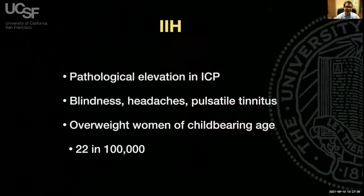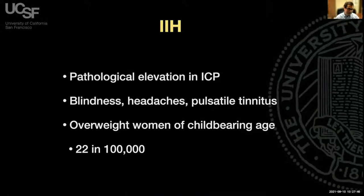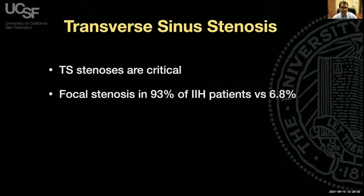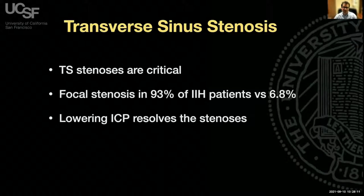Idiopathic intracranial hypertension is a pathological elevation in intracranial pressure that can cause blindness, headaches, or debilitating pulsatile tinnitus. It commonly occurs in overweight women of childbearing age, and in this patient cohort has an incidence of 22 out of 100,000. Transverse sinus stenosis has recently been understood to be critical to the pathophysiology of IIH. A focal stenosis is seen in 93% of patients with IIH as opposed to 6.8% of controls.